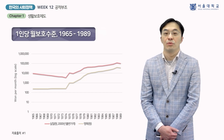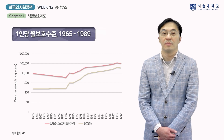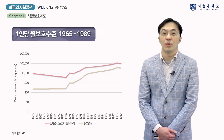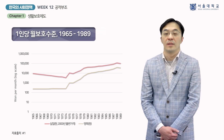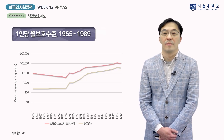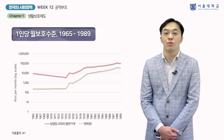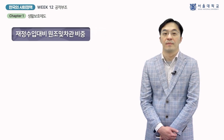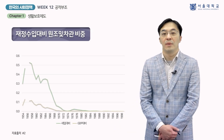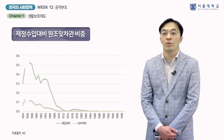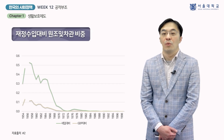1970년대 중반까지 구호 수준이 보잘것 없었던 이유는 두 가지입니다. 첫째, 국가 재정이 매우 열악했습니다. 생활보호 제도는 전적으로 국가 재정에 의해 운영되기 때문에 재정 여건이 좋지 않으면 제대로 작동할 수 없었습니다. 사실 한국의 재정은 미국군에 의한 군정 이래로 1960년대 후반까지도 해외 원조에 크게 의존했습니다. 그림은 재정 수입 대비 원조 및 차관 비중, 그리고 국내 총생산 대비 원조 및 차관의 비중을 나타냅니다. 1953년 한국전쟁 종전 이후 정부의 재정 수입에서 원조가 차지하는 비중은 한때 50%에 이르렀습니다.